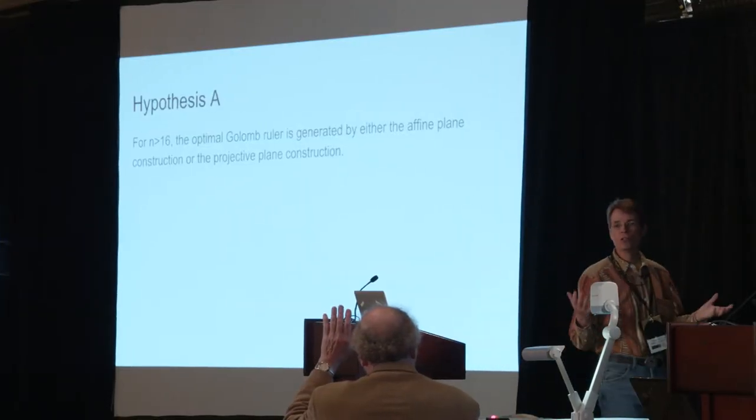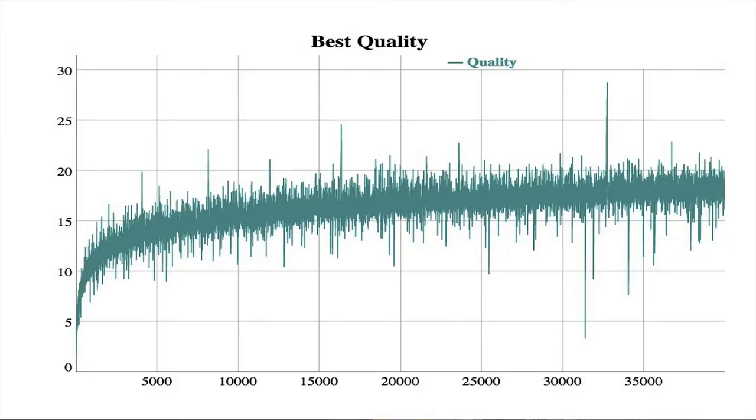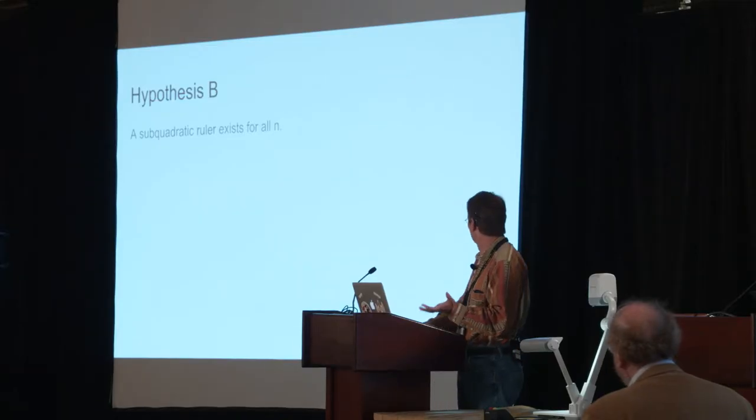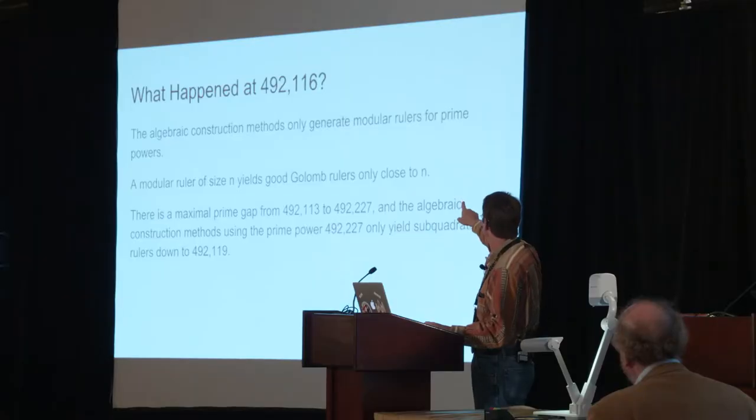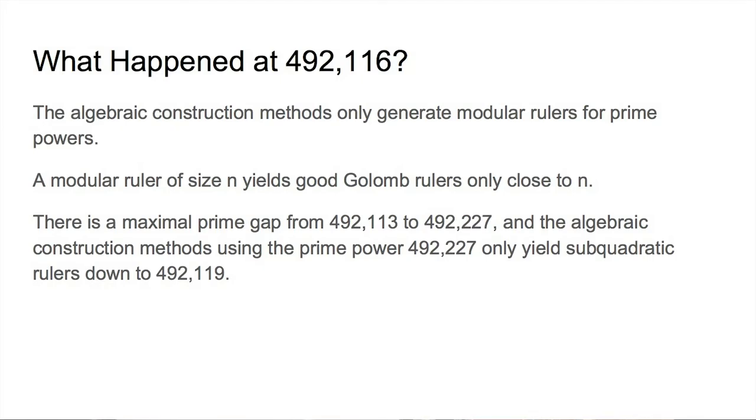What we did is generate all of these rulers, and we noticed that these rulers always generate sub-quadratic rulers. We've confirmed this statistically through size 40,000. There's a hypothesis that this always happens — but it turns out that doesn't work. At size 492,116, we cannot use these algebraic methods to generate a sub-quadratic ruler, and this is the first size that happens. That's really the main point of my talk: 492,116 is the first number for which these algebraic methods do not generate a sub-quadratic ruler. Thank you very much.